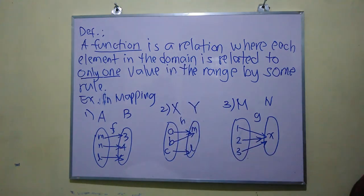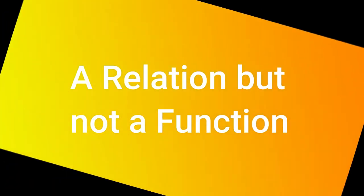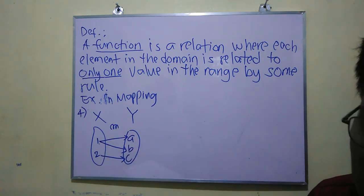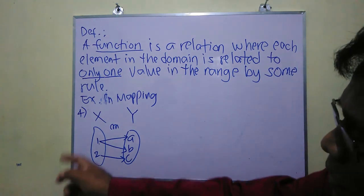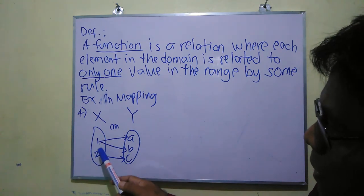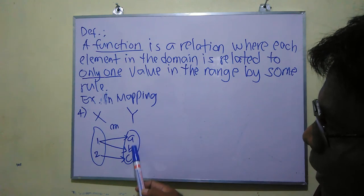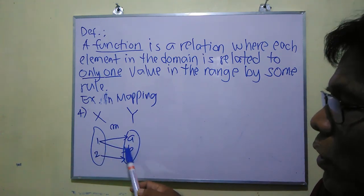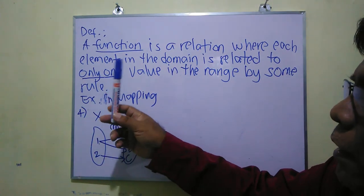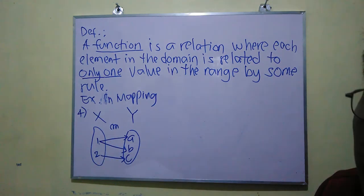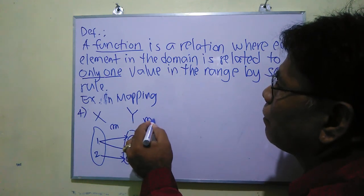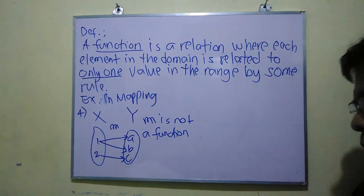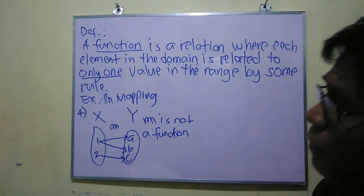Example number four is NOT an example of a function. Why? Because element 1 in set X corresponds to two elements in set Y — element 1 corresponds to 'a' and also to 'b'. This violates the definition of a function, because one element in the domain maps to more than one element in the range. Therefore, this mapping is not a function.